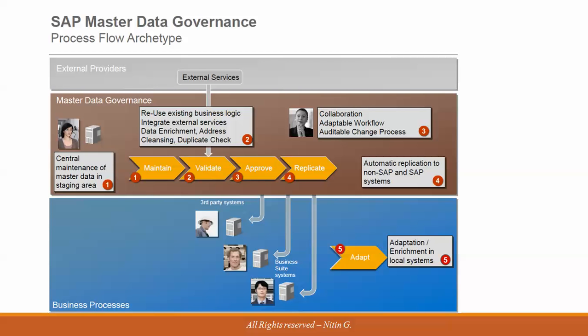Once approved, the data goes through a collaboration and adaptable workflow with an audit trail for change processes. A change request is raised and once assigned, the data is automatically replicated to both SAP and non-SAP systems. If a vendor master is going to 10 different systems, the data quality is consistent across all — payment terms, vendor numbers, vendor names, and paying vendor details are all aligned.